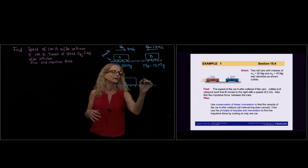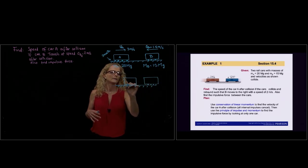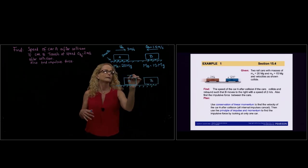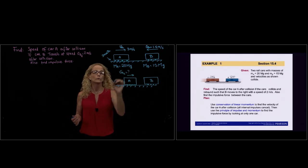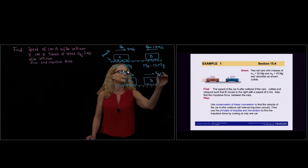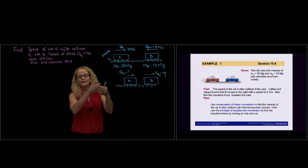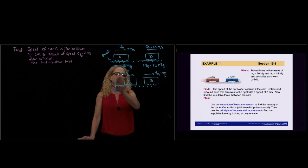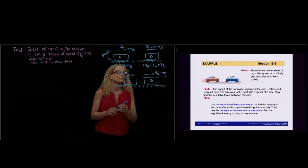We have car A and car B. Velocity A2 is unknown - that's what we want to find. Velocity B2 is 2 meters per second. Car B rebounds and travels to the right with a velocity of 2 meters per second.